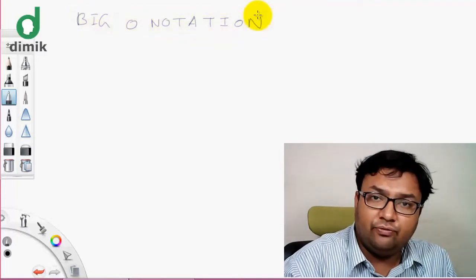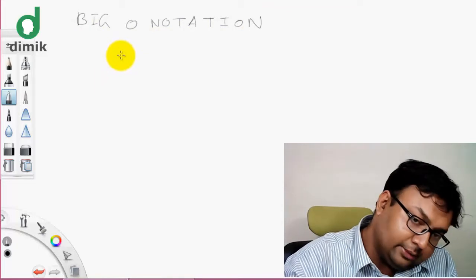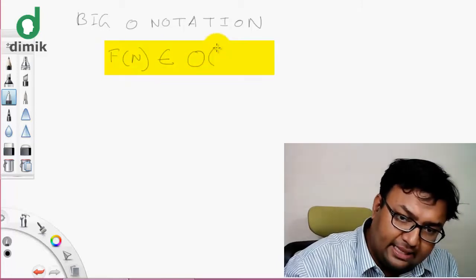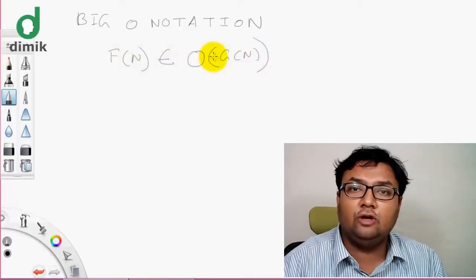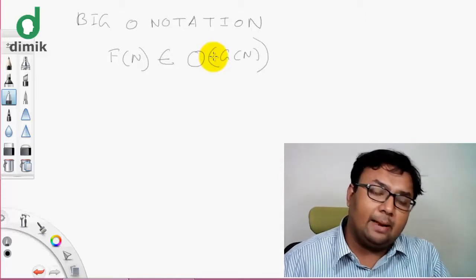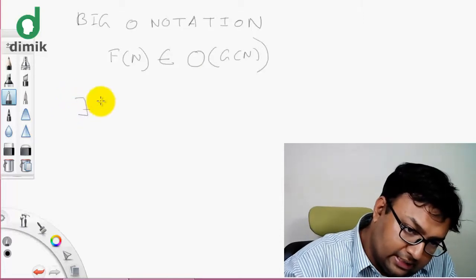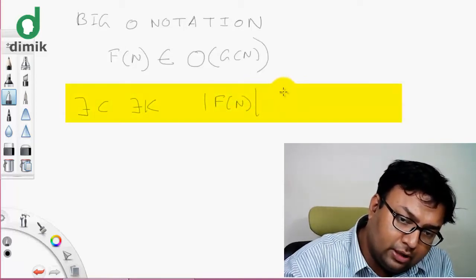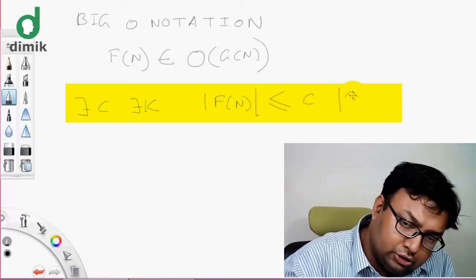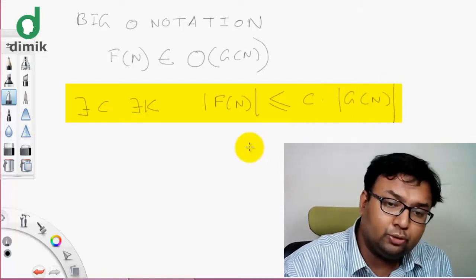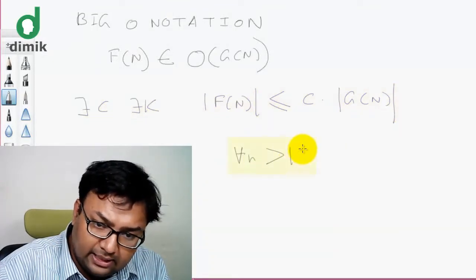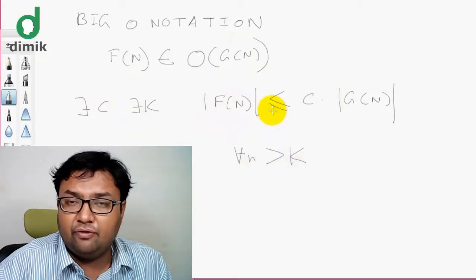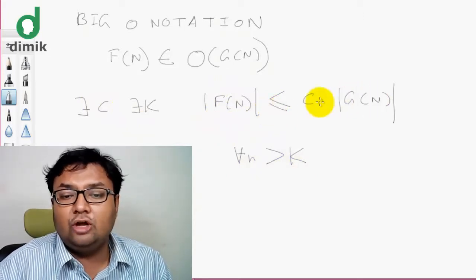The first function is Big O notation. We will represent that function f is Big O of another function g(n). I will write that f belongs to Big O of g. We will say that f function is small relative to g(n). The function of c is small — the function of f value is small compared to c into g(n).